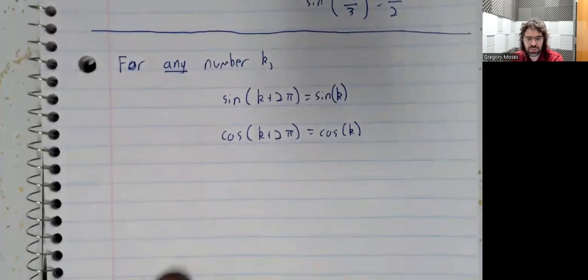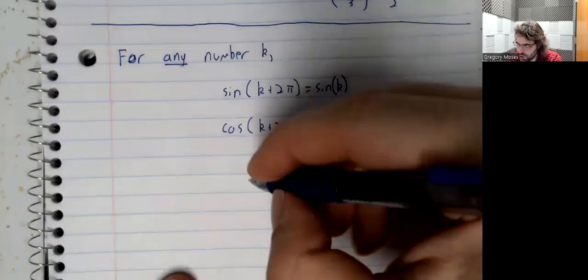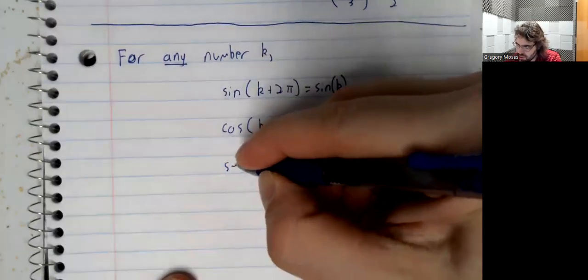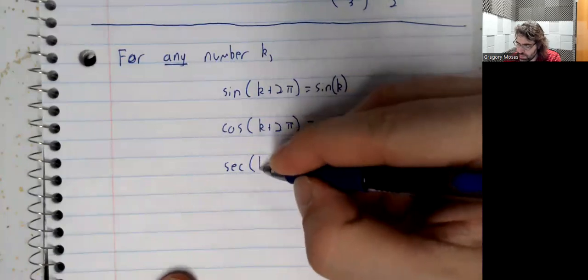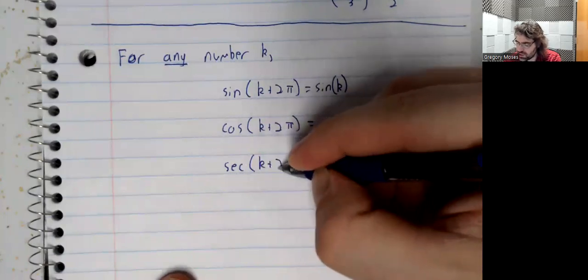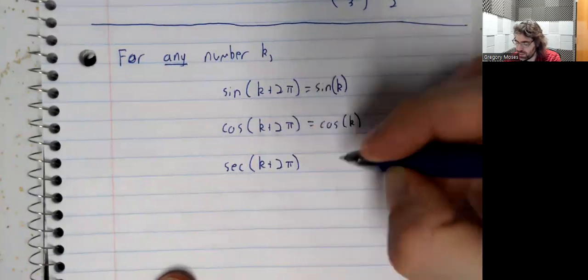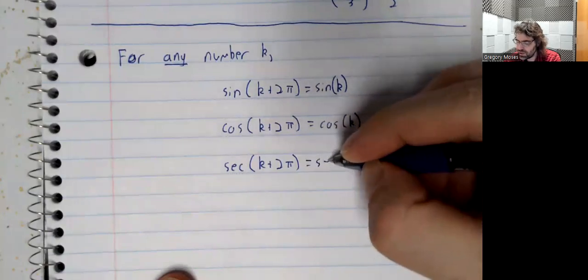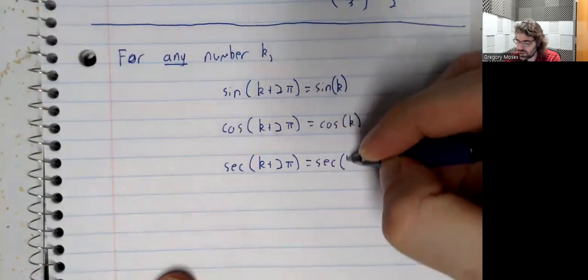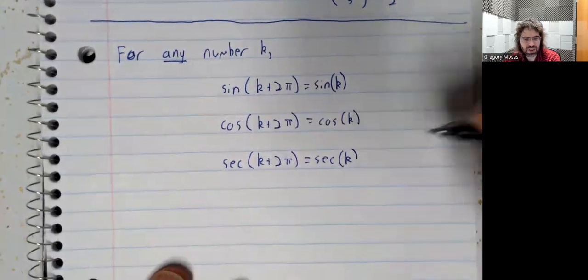As a matter of fact, the secant of k plus 2 pi is the secant of k.